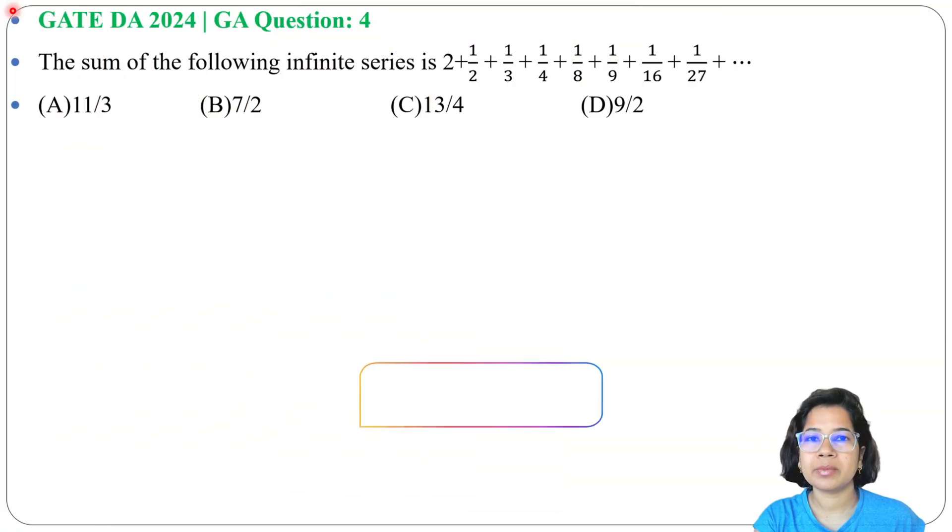Let's solve a previous question of general aptitude. This question was asked in GATE DA 2024, GA question number 4. The sum of the following infinite series is given, and four options are provided. First, identify this series.